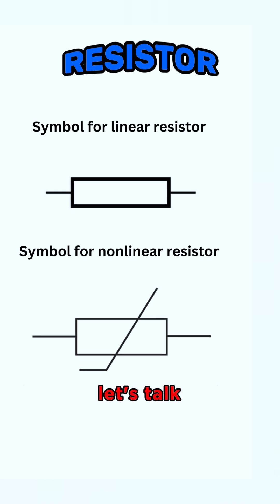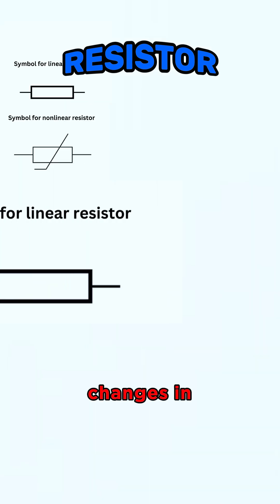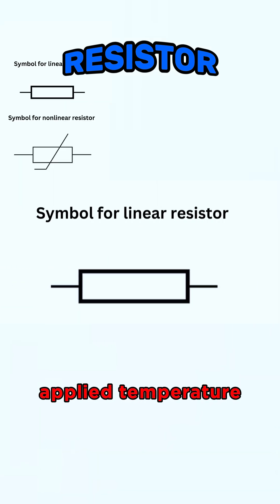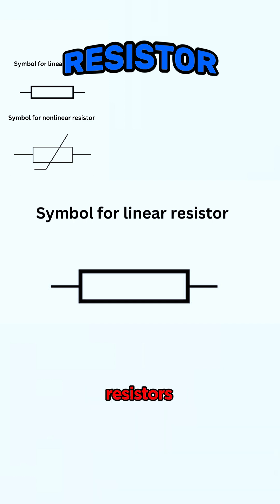Let's talk about linear resistors. The resistors whose values change with changes in applied temperature and voltage are known as linear resistors. There are two types of linear resistors.